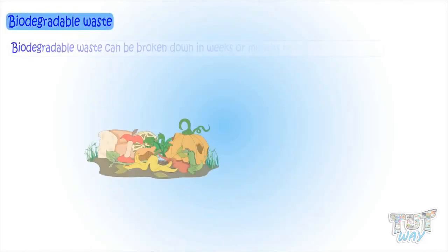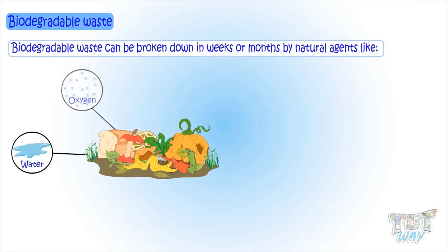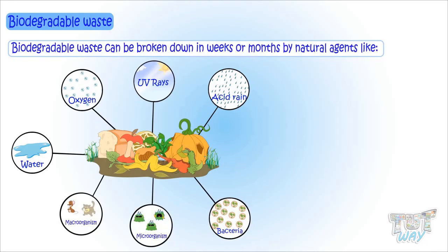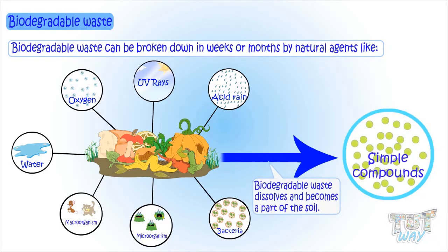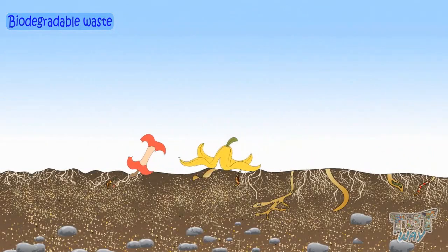The waste material that can be broken down in weeks or months by natural agents like water, oxygen, UV rays of the sun, acid rains, bacteria, and other micro and macro organisms into very simple compounds — that is, they dissolve and ultimately become part of the soil — are known as biodegradable waste.